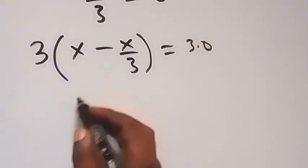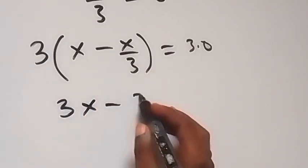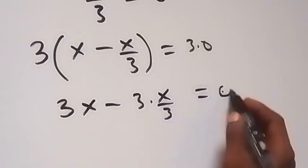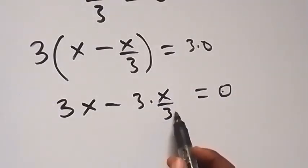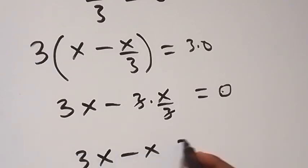This equals 3 times 0, that's 0 here. Then 3 cancels 3 here, so we have 3x minus x equals 0.